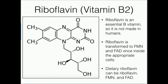In the appropriate cells where FAD and FMN need to be used as coenzymes, the riboflavin is going to be transformed into those two — initially first FMN and then FAD — and it's going to be enzymatic reactions that do that, and we're going to look at those in just a little bit.